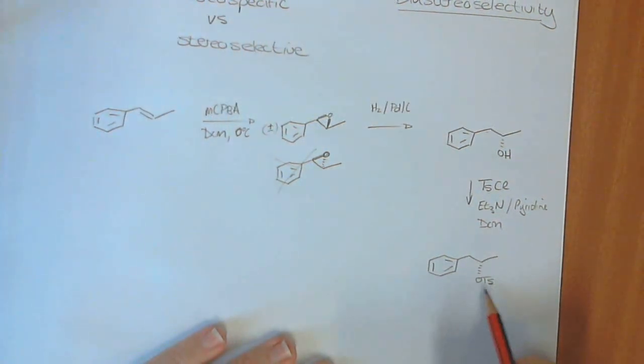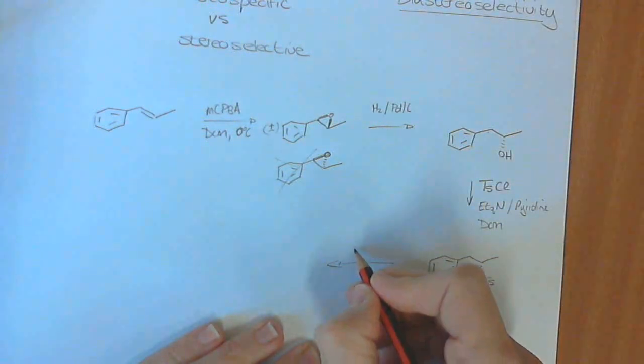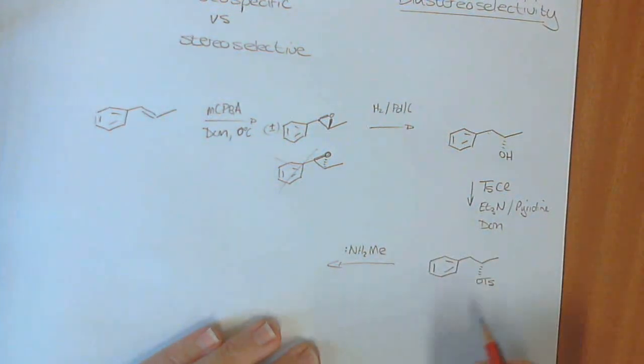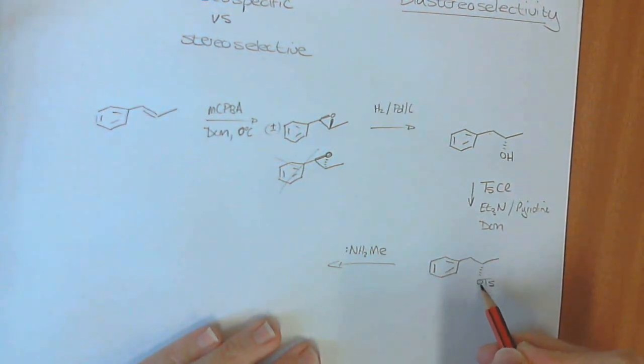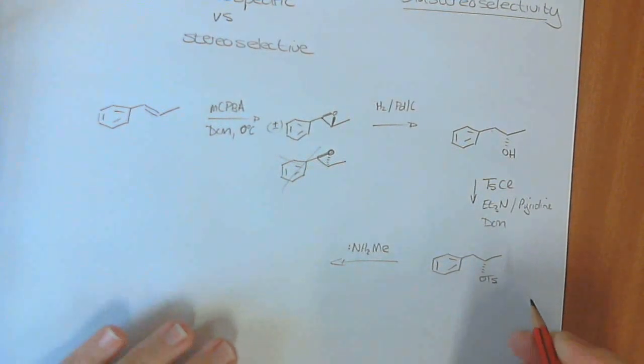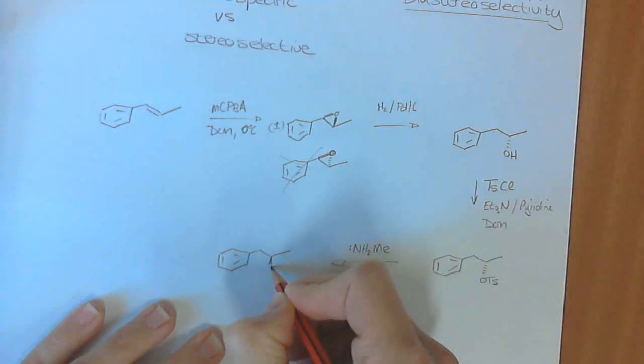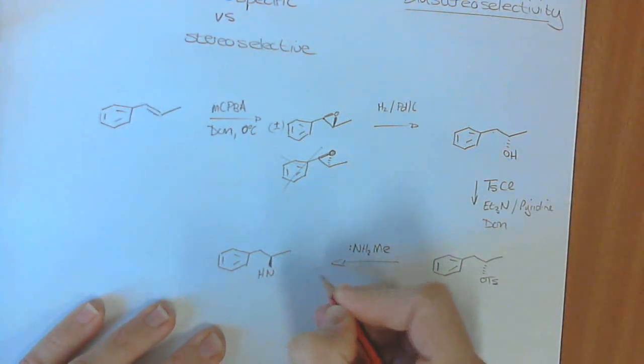So this is now a good leaving group. And now we're treated with a good nucleophile, for instance, such as methyl amine. Methyl amine. Amine is a very good nucleophile. So when we do a substitution reaction on this, this goes by an inversion of stereochemistry. And so the product would look like this.